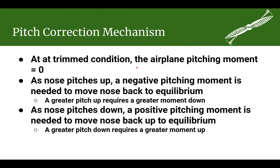When we have a statically stable airplane in the longitudinal axis, there's a pitch correction mechanism. Let's talk about what that mechanism is. When our airplane is trimmed, that means we're flying with no pitching moment — the nose is not trying to continuously go down or up. Pitch is an up or down movement of the nose of the airplane.